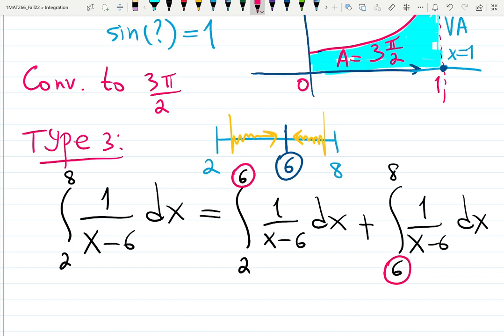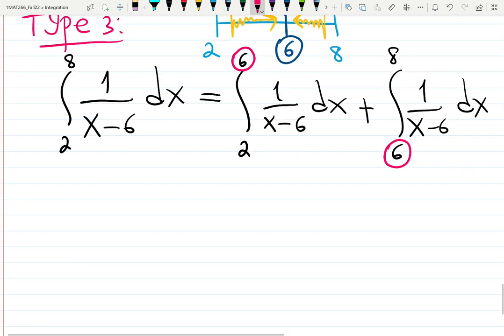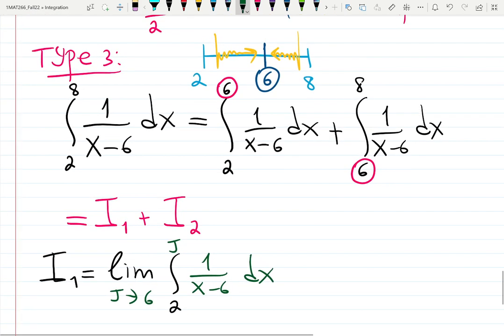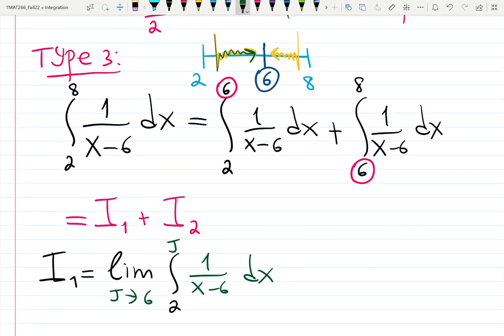And then I'll just work it the way we learned before. Some people like to write it down like so. It's integral 1, i1 plus i2. And they solve them separately. i1 and i2. i1 will be written as limit integral from 2. Let's take the first letter of my name, j. j goes to 6. 1 over x minus 6 dx. j goes to 6 from the left or from the right? See, check the graph, the sketch from the left. So minus.